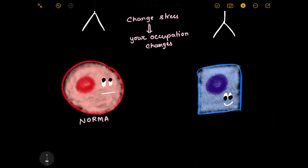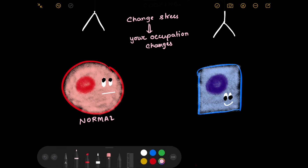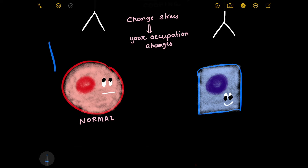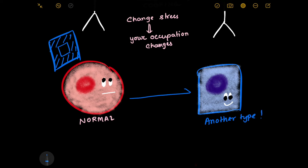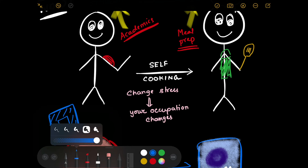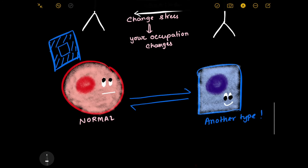Similar things happen to cells. Suppose a normal cell is given the task of fitting into a hole in a wall. The cell cannot handle this kind of stress, so to deal with it the cell can change into another type of cell. This is a reversible process — when the stress returns to the initial type, you get back to your normal cell type, just like when your meal cooking is done you get back to being a student. This process is known as metaplasia.